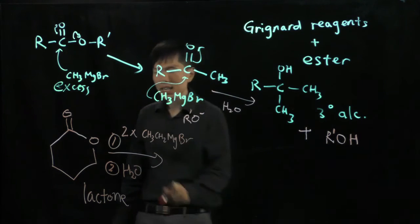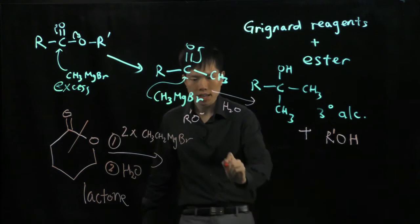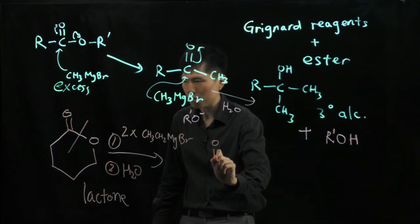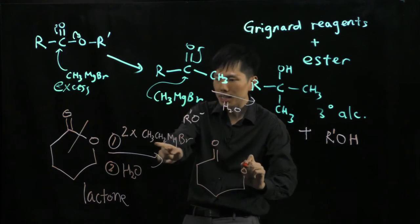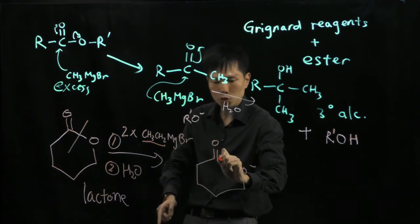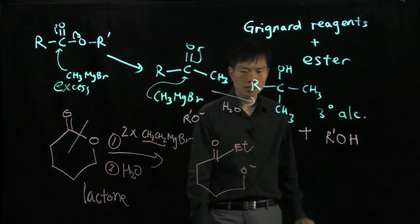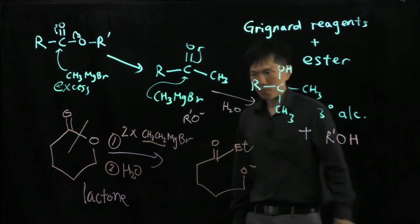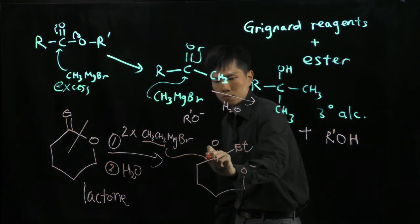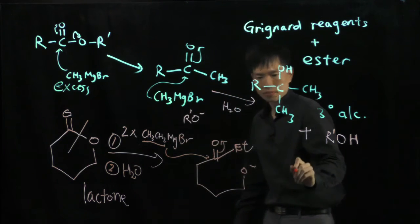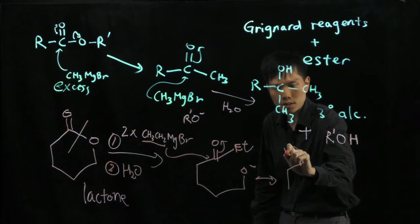Likewise, we know that step one, you will attack this carbonyl group, you will cut off this bond and you will have O minus and the ethyl group here will join. Let me just put ET, ethyl group will join. And then the next step, more of this Grignard reagent will attack this carbonyl group. Push it out.